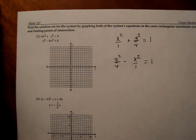And now you just need to graph both of those and find the points of intersection. So let's use some different colored pens to do this. I'm going to use green to do my ellipse and red to do my hyperbola.